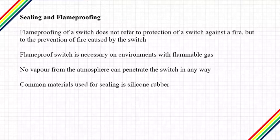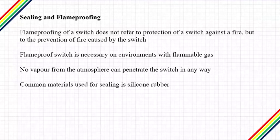Flameproofing of a switch does not refer to protection of the switch against fire, but to the prevention of fire caused by the switch. This is used for the protection against flammable gases in the surroundings, which can cause fire whenever there is arcing or sparking on the switch contacts. These hazardous environments include mines, chemical stores, and processing plants that make use of flammable solvents, where sparking and arcing should be minimized or eliminated.